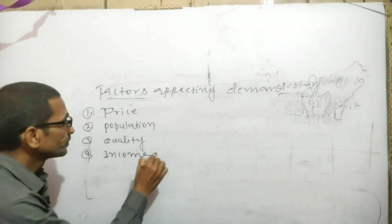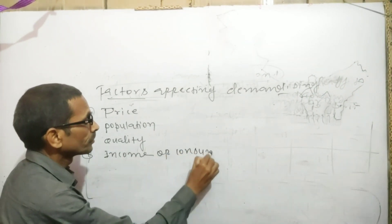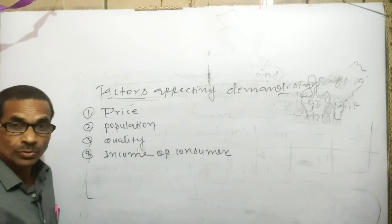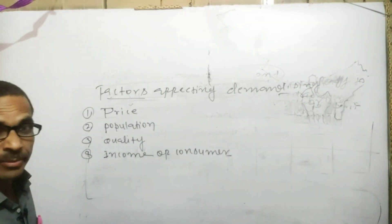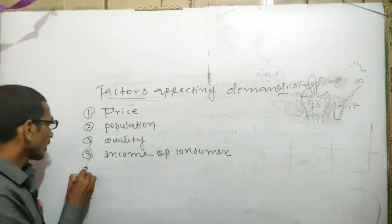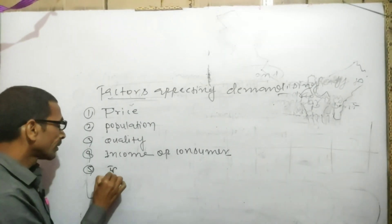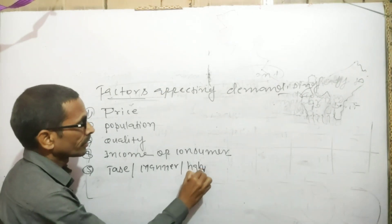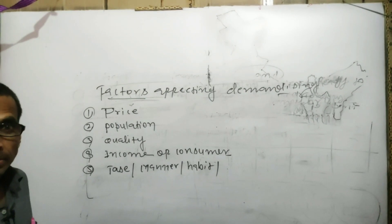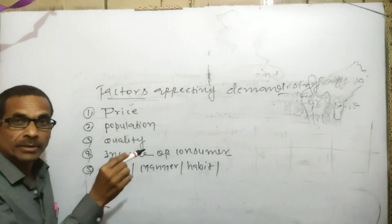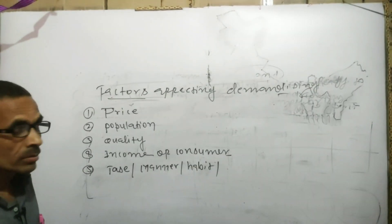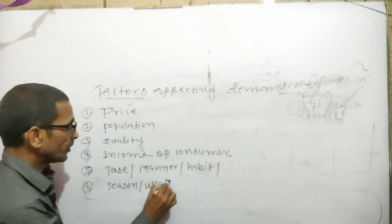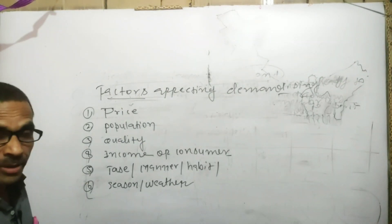Income of consumer — yadi consumer ke income mein increasement ya decreasement hota hai, to demand mein bhi fall ya rise aayega. Yadi logon ke taste mein, manner mein, habit mein koi change aate hain to uska bhi seedha asar kisi product ki demand ko rise aur fall ki sthiti mein layega. Next factor ke roop mein aap season ya weather ka change — season ya weather ke change hone se bhi demand ke level mein change aata hai.